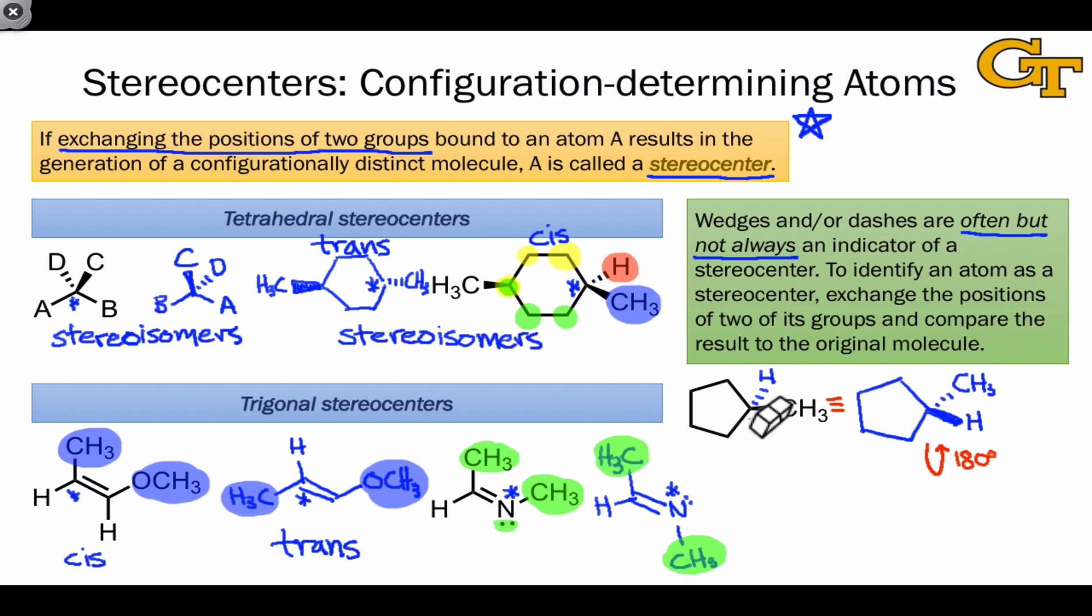As a consequence, this carbon bearing wedges and dashes is not a stereocenter. And for this reason, the wedge on CH3 is entirely optional. It's often included to emphasize the tetrahedral geometry of this carbon, but that doesn't make the carbon a stereocenter.